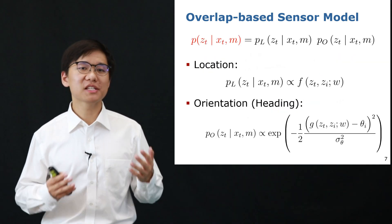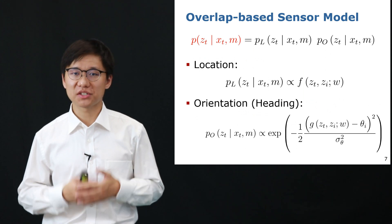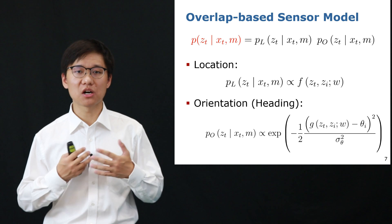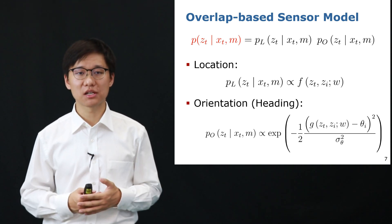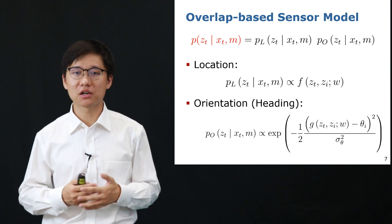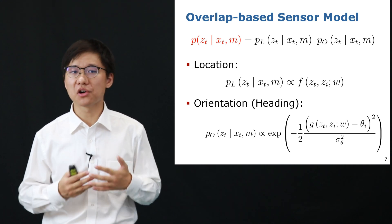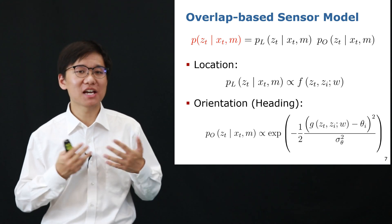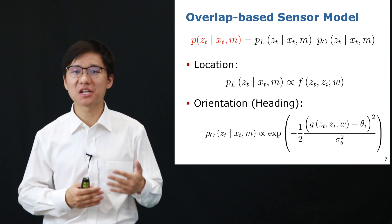To formulate a learned observation model with the estimates from OverlapNet, we first need to decouple the observation model into two parts. One part is the location likelihood and the other part is the orientation or so-called heading likelihood. We formulate them both as the agreement between the query frame and the map frame.